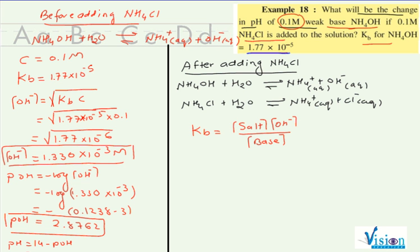So over here, KB is 1.77 into 10 raised to minus 5, salt concentration is 0.1, OH minus we have to find out. Base concentration is also 0.1. So therefore, concentration of OH minus is 1.77 into 10 raised to minus 5.